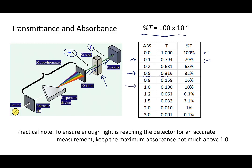An absorbance value of 1 means only 10% of light gets through — for every 100 photons in, only 10 escape to the detector. At absorbance 2, only 1% gets through; at absorbance 3, only 0.1%. Because of this, anything above about absorbance 1 has very little light hitting the detector, making the detector response inaccurate. To keep measurements accurate, you generally don't want to go much above 1. If you see a spectrum with a maximum of 2.5 or so, those values are just not credible.